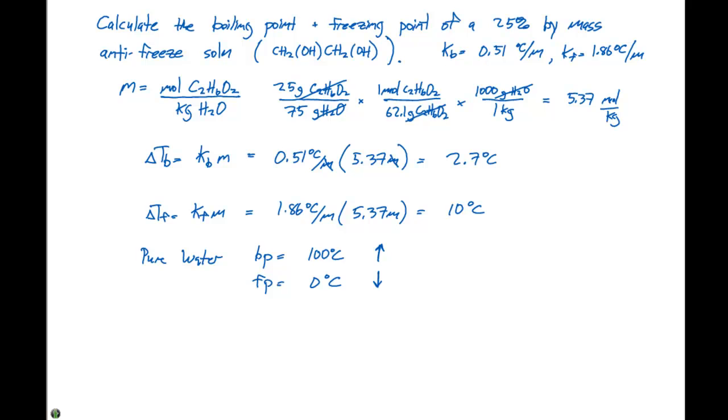So when we look at this change in temperature, we need to add the value, which in this case is 2.7 degrees Celsius, to the 100 degrees Celsius. So our new boiling point is going to be 102.7 degrees Celsius. And our new freezing point, we need to subtract, and that's going to be now minus 10 degrees Celsius. So remember, we have boiling point elevation and freezing point depression. So here's our new boiling point, and this is our new freezing point, with the antifreeze solution added to the pure water.